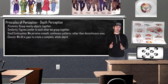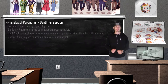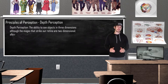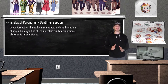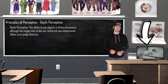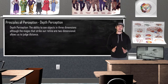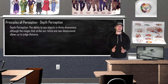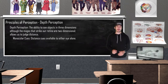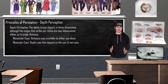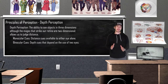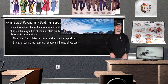Depth perception allows us to see objects in 3D space even though our retinal images are all two-dimensional. Depth perception also helps us with judging distance. Research on the visual cliff study revealed that many species perceive the world in three dimensions at or very soon after birth. We use different binocular and monocular cues to transform 2D sensations into 3D perceptions. Monocular cues are depth cues we can perceive using either eye alone, while binocular cues require the use of both eyes.